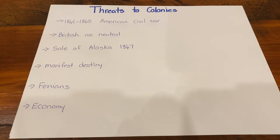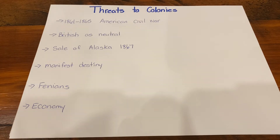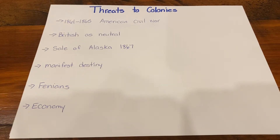During this conflict, because the United States was a trading partner of the British, they remained neutral. So even though they as a nation were against slavery and had abolished slavery, they continued to trade with the southern states because they needed their resources — they needed their cotton.